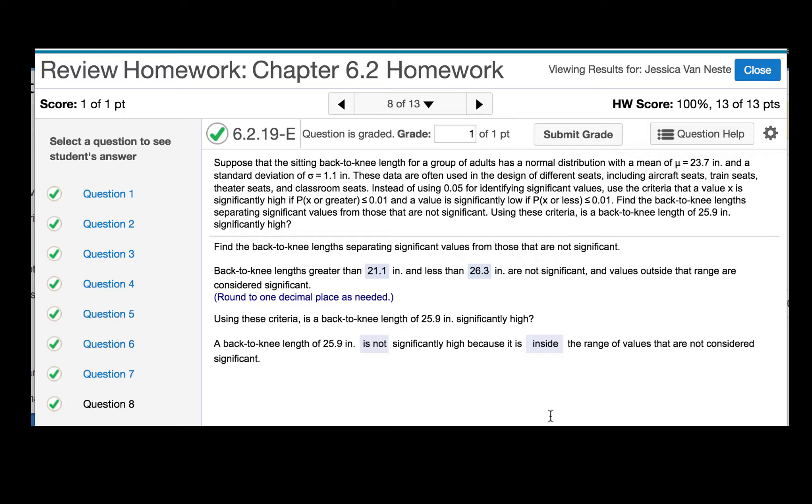Find the back-to-knee lengths separating significant values from those that are not significant. Using these criteria, is a back-to-knee length of 25.9 inches significantly high? So the first thing that we will do is find those cutoff points for what is significantly low and what is significantly high.